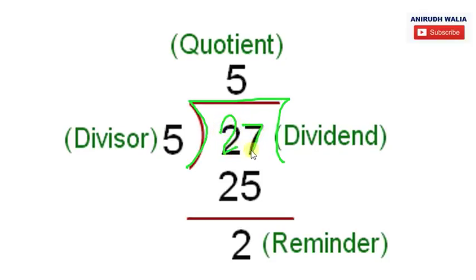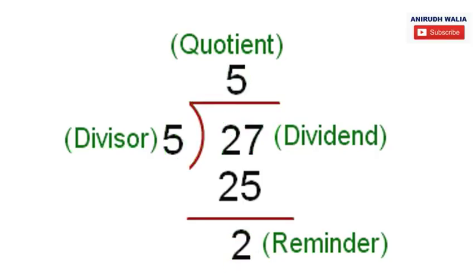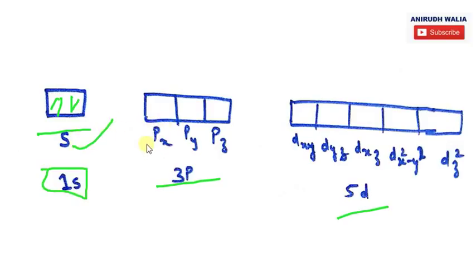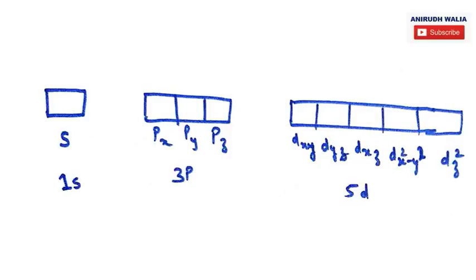If someone knows how to divide, they can easily figure out the hybridization. Let's say any number — like 27 — if this is divided by 5, the divisor is 5, whatever comes over there is the quotient, and whatever comes at the last is the remainder. So this is the basic. Now, the s subshell has one orbital, p has three orbitals (px, py, pz), and d has five orbitals (dxy, dyz, dxz, dx²−y², dz²).